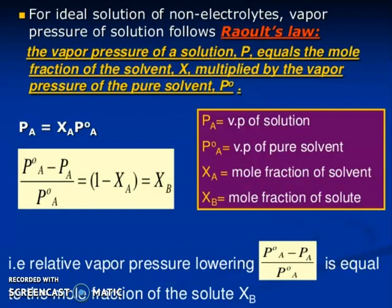That is relative Vapor Pressure lowering: P°A minus PA divided by P°A equals the mole fraction of the solute B, mole fraction of solute B. And this is very important. Mole fraction of B, you can calculate very easily. If you know the mole fraction, 1 minus XA means that is the mole fraction of B.